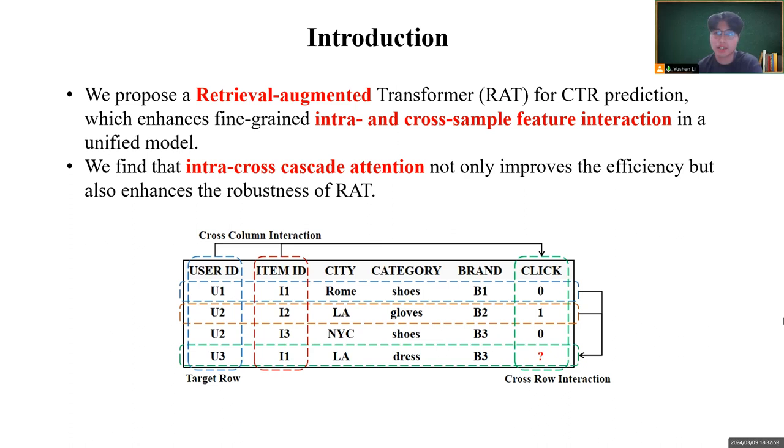To explore the efficacy and efficiency, we design different model variants. We find that intra-cross-cascade attention not only improves the efficiency, but also enhances the robustness of RAT.